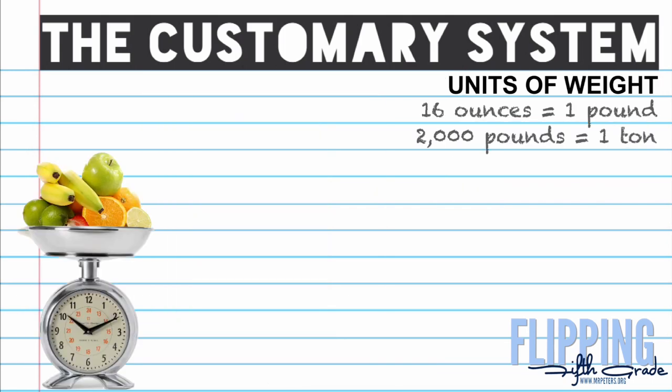Now let's move on to the customary system using the units of weight. There are really only three different units of weight: ounces, pounds, and tons. It's important to note that these ounces are not fluid ounces — these are ounces of weight. There are 16 ounces in one pound and there are 2,000 pounds in one ton.